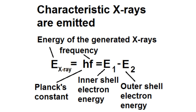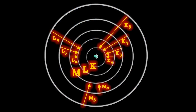The energy of the emitted radiation is defined by the electrons that participate in this process. For example, if the electron falls from the L-shell to the K-shell, then we are dealing with K-alpha radiation.